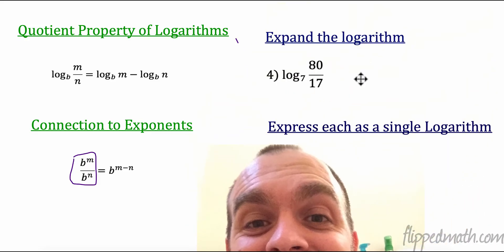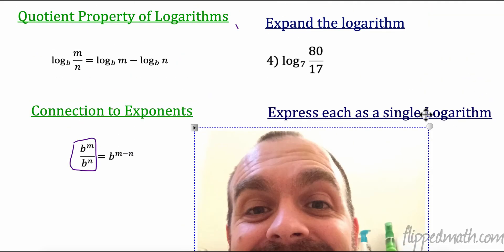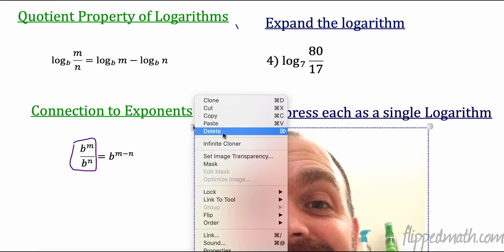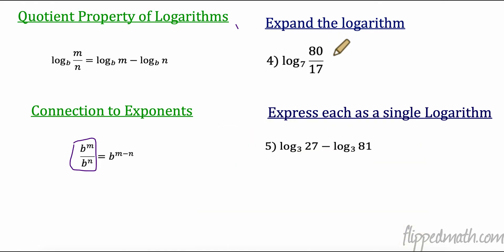So let's take a look here at these problems. Let's expand this one first and foremost. So I have log base 7, so I need to keep log base 7. The numerator, the top one, goes first. So that's log base 7 of 80 minus log base 7 of 17. Let's go backwards now - we're going to condense it or express it as a single logarithm. So I have log base 3. I'm dividing, so this is 27 over 81. I actually know that 27 times 3 is 81, so I can reduce this. So that's log base 3 of 1/3.